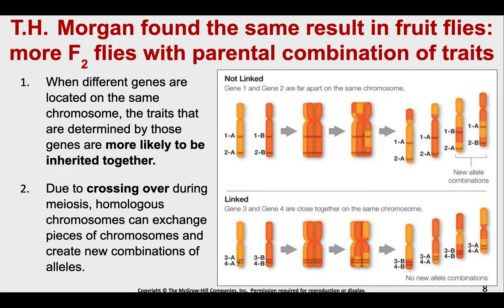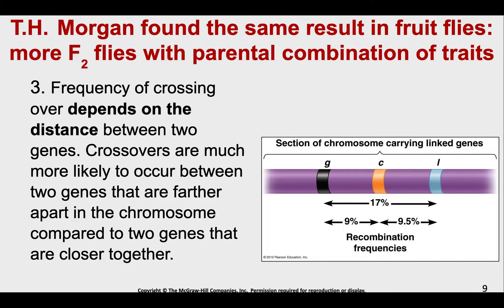The frequency of crossing over depends on the distance between two genes. If we look at a section of chromosome with genes G, C, and L — between G and L there's a 17% recombination frequency, meaning about 17% of the time they will be involved in crossing over. But for genes closer together, like G and C or C and L, that frequency goes down significantly. Think of it this way: genes far apart have a lot of room in between for chromosome breakage to occur, whereas two genes right next to each other require breakage at a very specific location, which is much less likely.